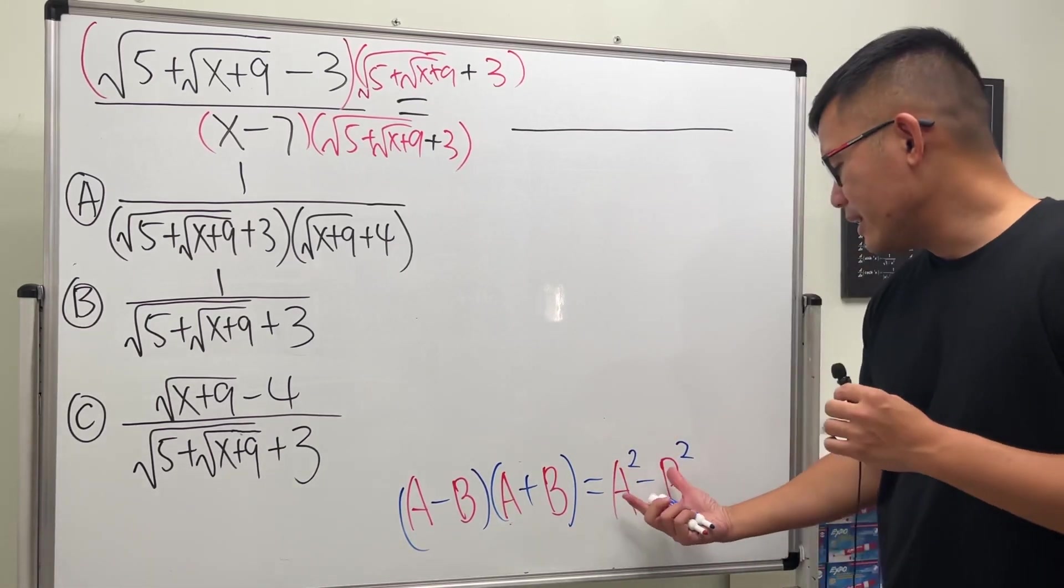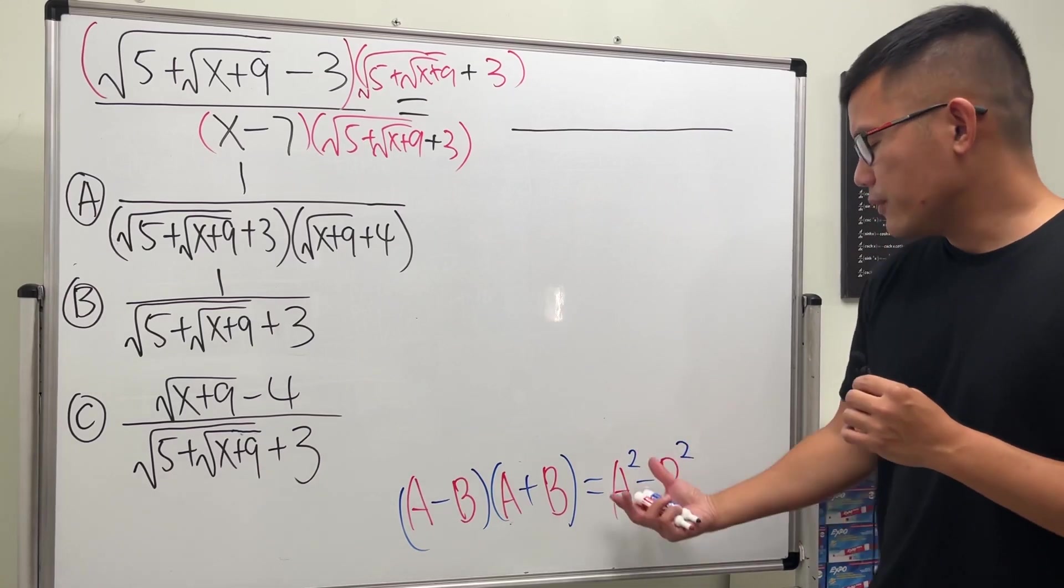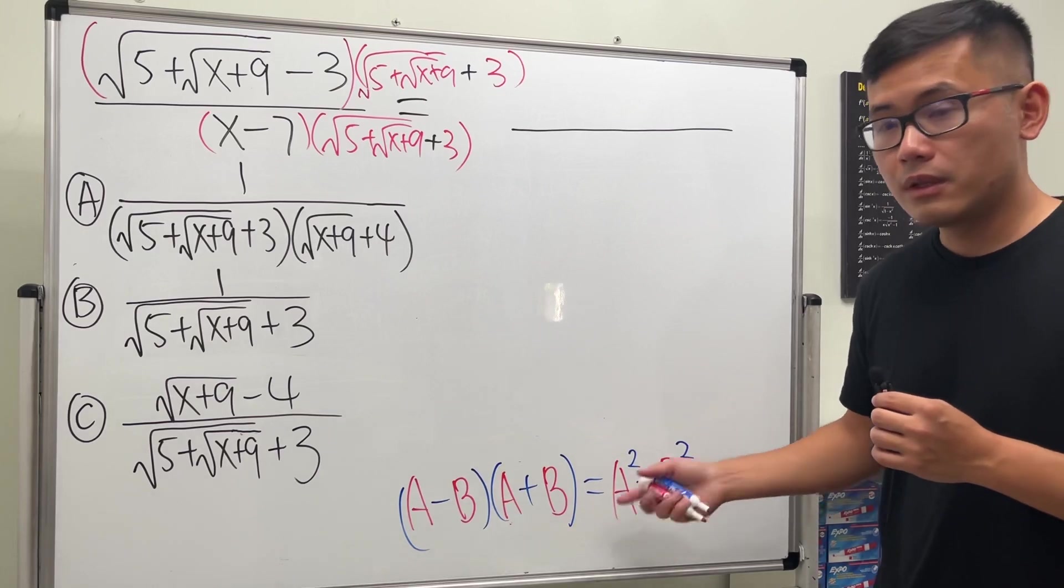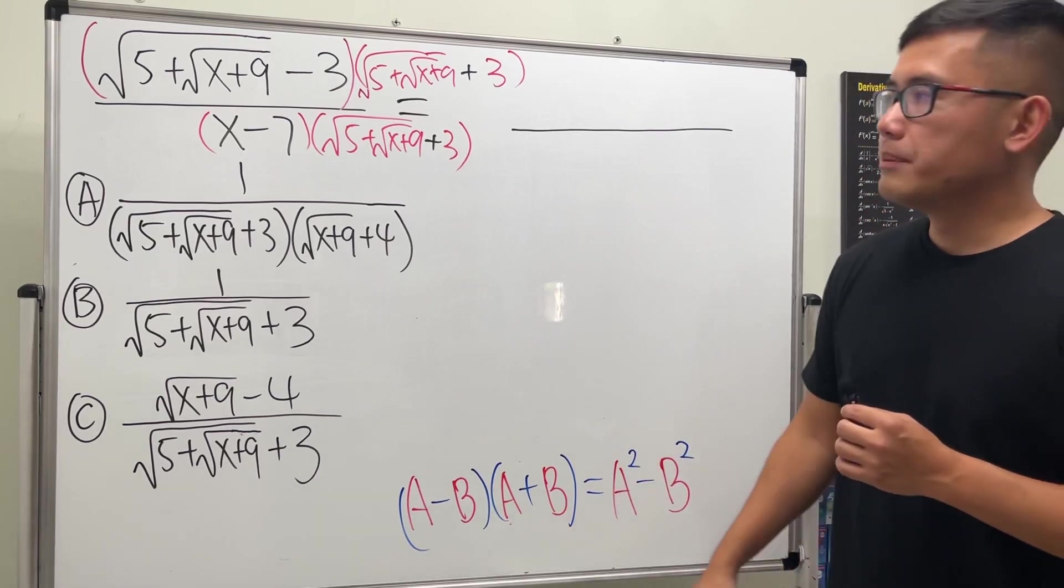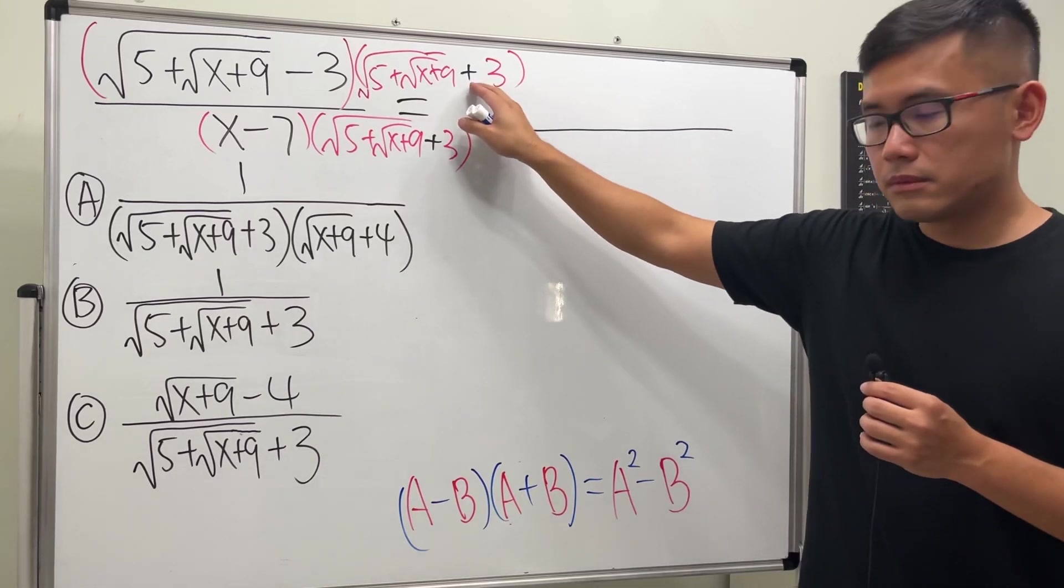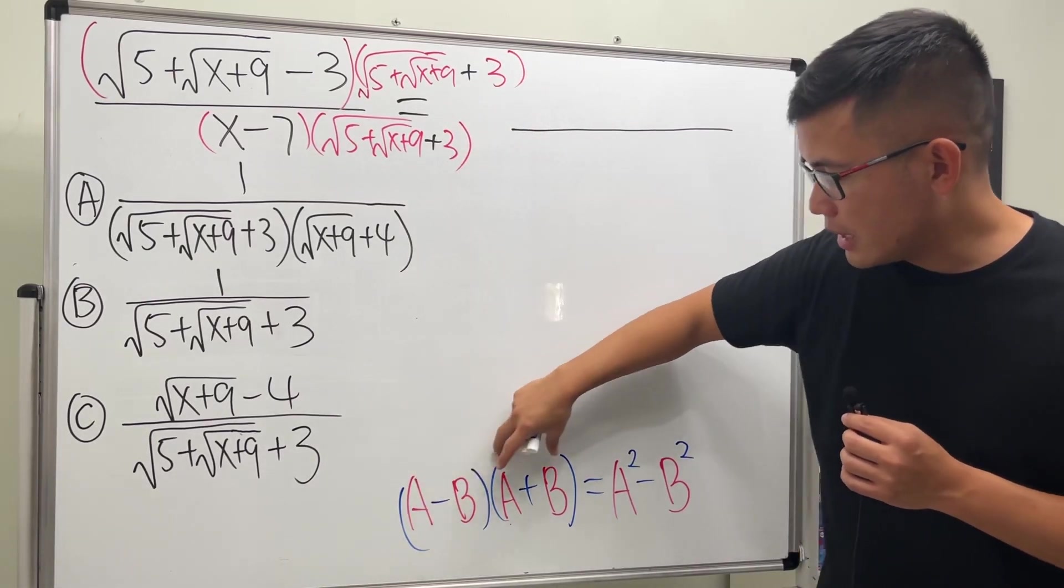Usually I would say we do it from right to left a lot more often because that's the factoring formula - factoring of difference of two squares. But the goal right here is that we have a minus, we multiply by a plus, so it's like (a-b)(a+b), and we produce a² - b².